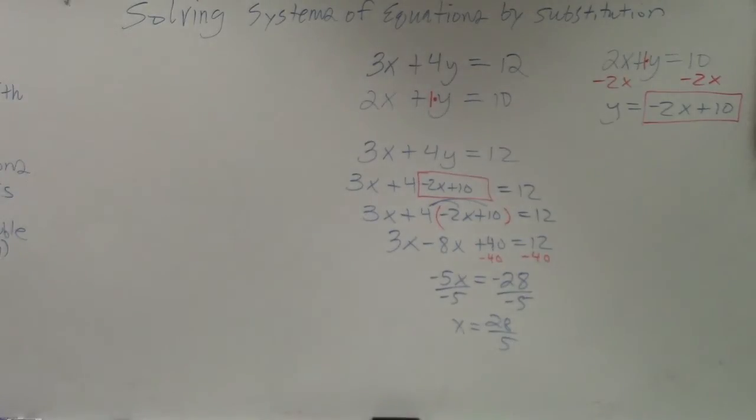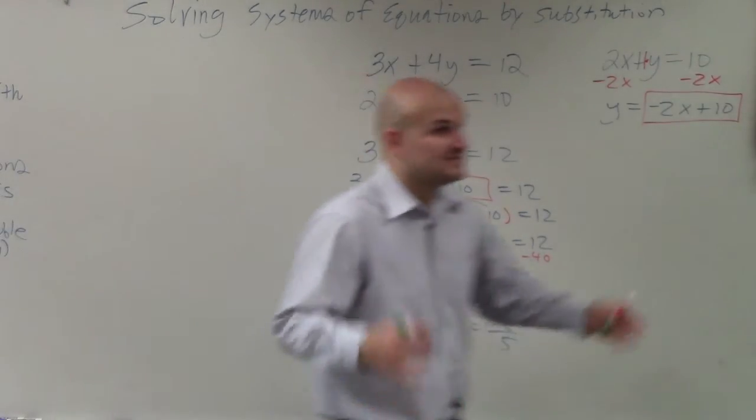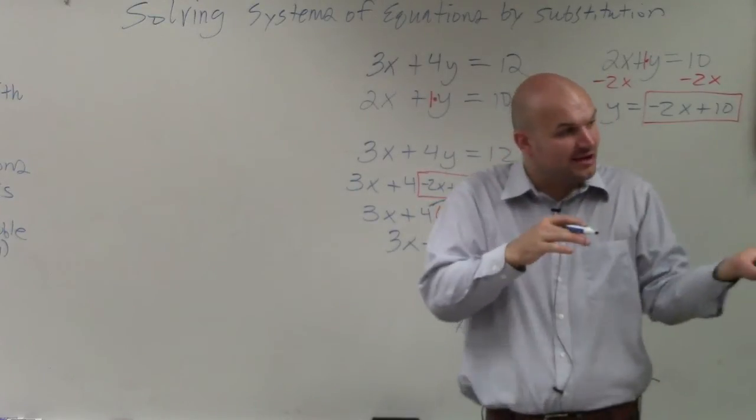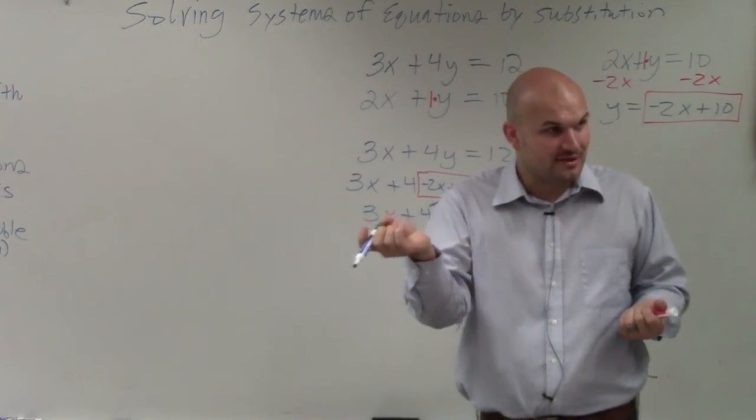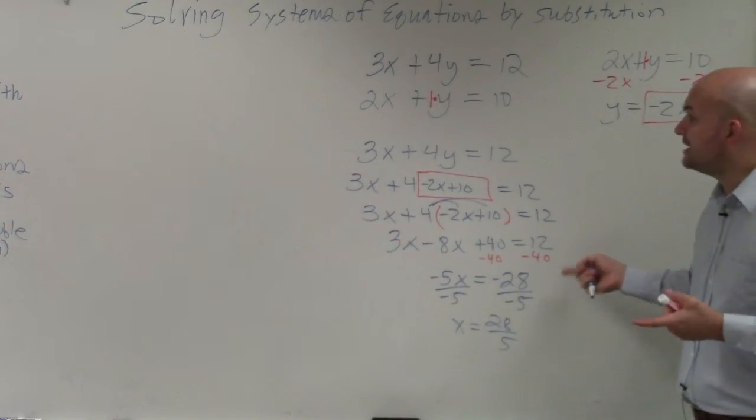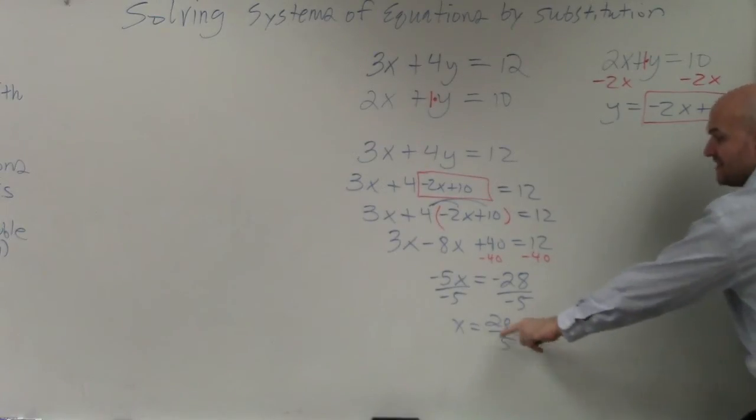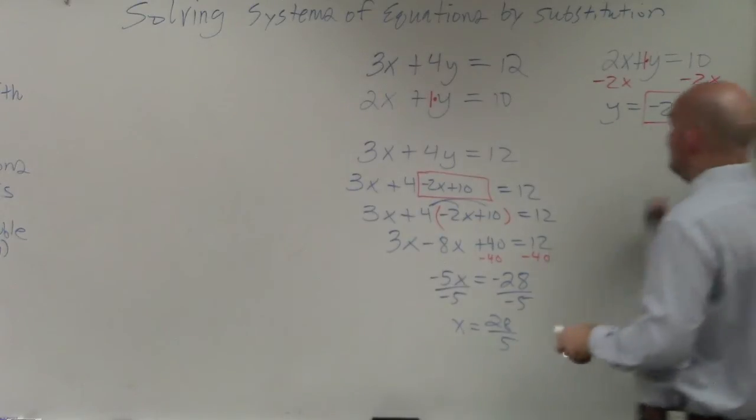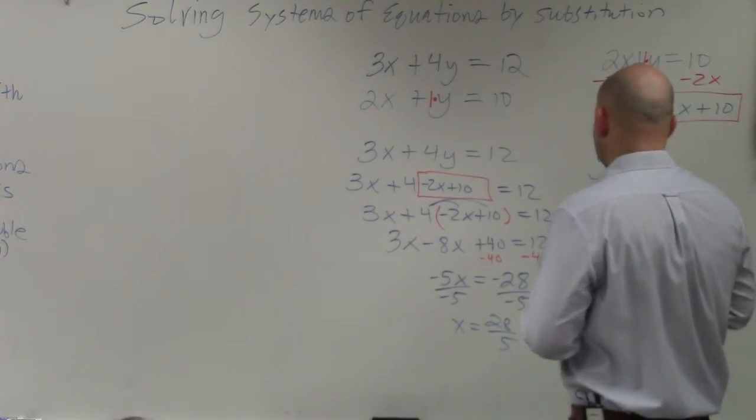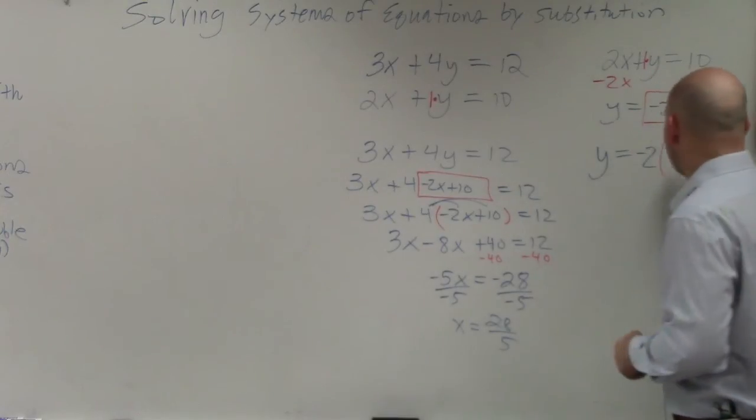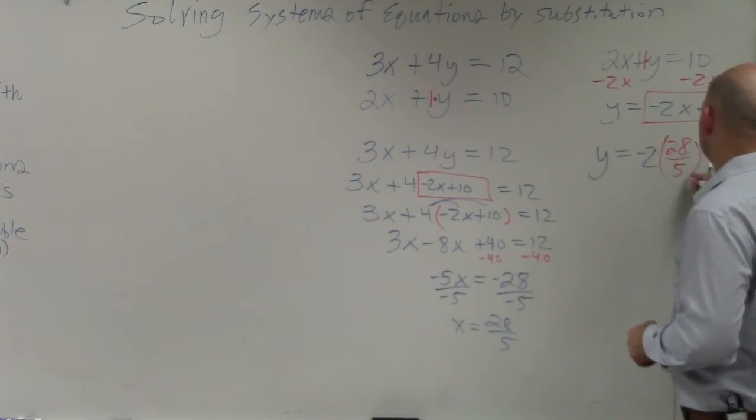So we're going to simplify and solve for the other variable. Now, once I know what x is, remember, when you guys look at this, when we have the intersection, we have a value for x, and we have a value for y. Correct? So if we know the value of x, we need to figure out what the value of y is. So what I can do is go back over here and plug in the value of x back into this equation to solve for y. So I have y equals negative 2 times the value of x, which is 28 over 5, plus 10.